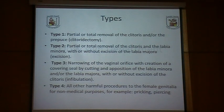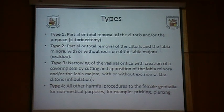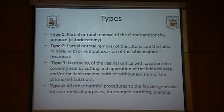There are several types depending on where it is practiced. Type 1 involves partial or total removal of the clitoris. Type 2 involves removal of the clitoris in addition to the labia minora, with or without excision of the labia majora. Type 3 is more severe, involving narrowing of the vaginal orifice with creation of a covering seal by cutting the opposing labia minora and/or labia majora, with or without excision of the clitoris — known as infibulation. Type 4 includes all other harmful procedures for non-medical purposes, such as pricking or piercing.